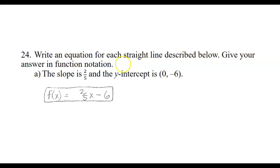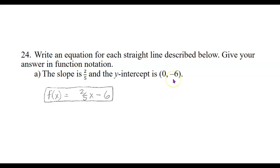Now, write an equation for each straight line described below. Give your answer in function notation — meaning our final answer should be f of x equals something. The first one is easy if you know the slope and the y-intercept: right away we can write an equation in slope-intercept form, mx plus b, where m is 2 fifths and b is negative 6. So f of x equals 2 fifths x minus 6.